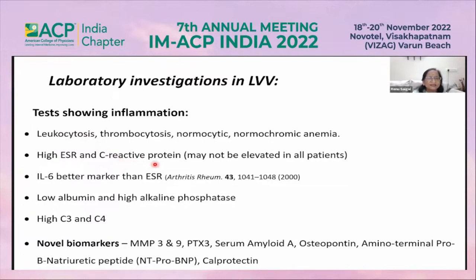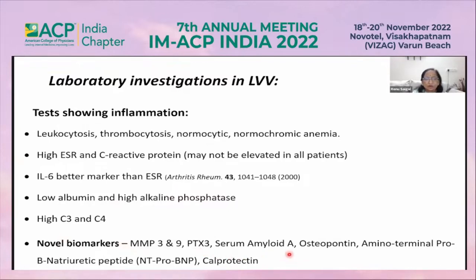I remember one of my patients who presented with fever and 23,000 WBC count but was not at all toxic; on examination, there was a bruit over the carotid arteries. There is high ESR and CRP, though these may not be elevated in all patients. IL-6 is a better marker than ESR in these patients. Low albumin and high alkaline phosphatase may also be present, along with high C3 and C4.